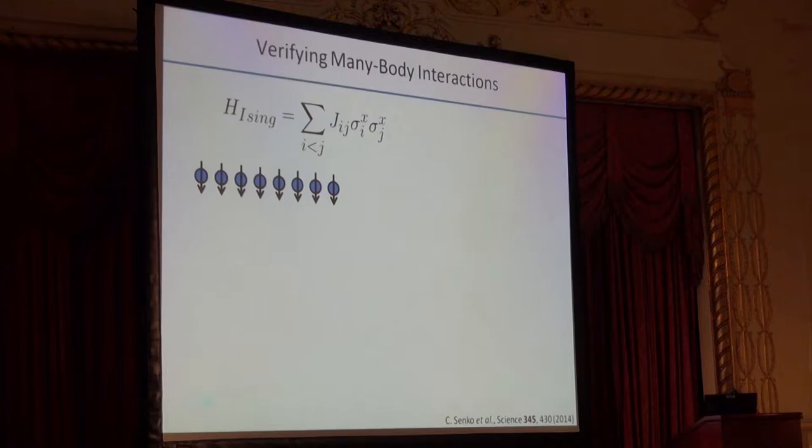That's the theory at least, but now we want to make sure that the Hamiltonian that the ions are seeing is actually the one we think we're applying. If this were an atomic level structure question, we would perform spectroscopy and compare the Hamiltonian to what we calculate, then measure it in the lab. Here it's no different. We've come up with a many-body equivalent of a spectroscopy technique for verifying these types of Ising couplings.